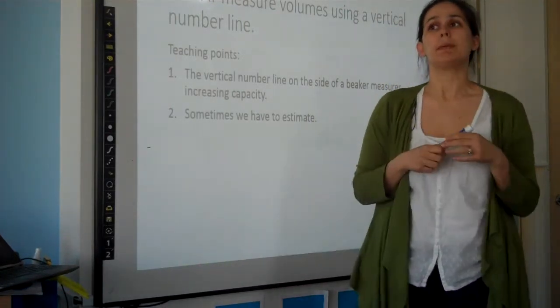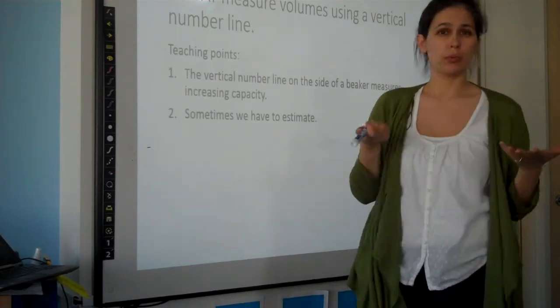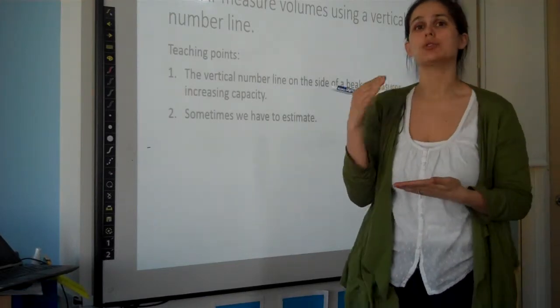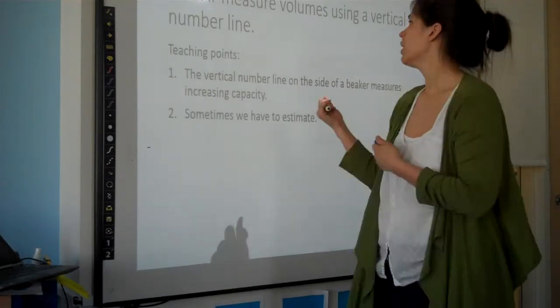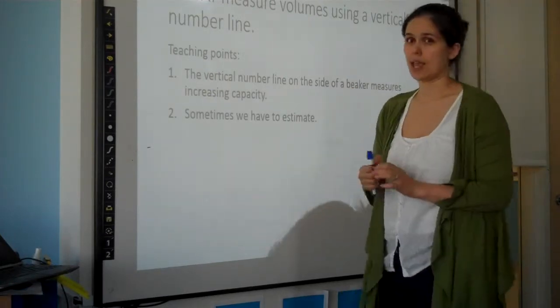Now ideally you would be able to give every group a two-liter bottle that they could use to create a vertical number line, but if not you can do this as a whole group.